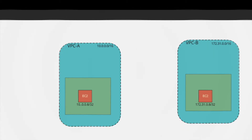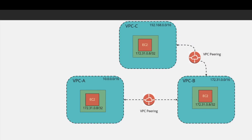Now let's take the scenario where you have more than one VPC. What if you want your VPC resources to talk to each other? Both VPCs have different subnets, and each resource within each subnet will have its own private IP. AWS provides a service called VPC peering. With VPC peering, you can enable resources within each VPC to talk to each other using their private subnets.